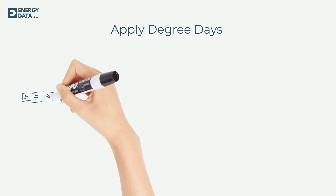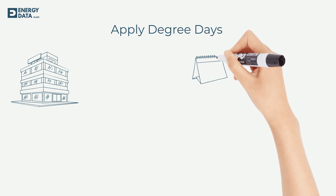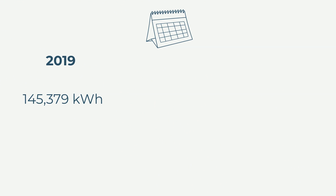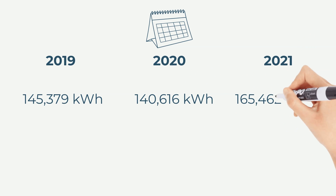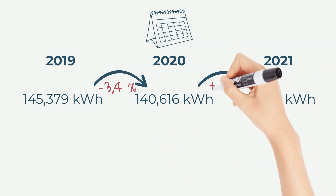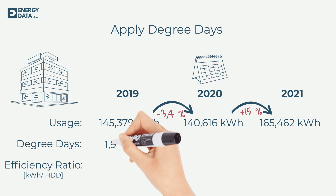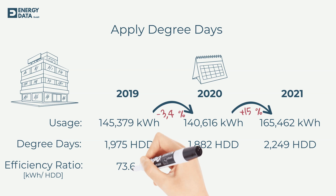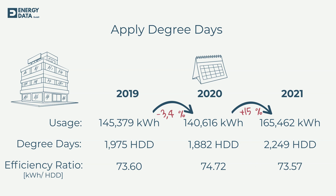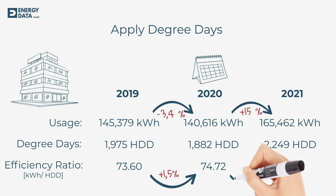Let's go back to the example from the beginning of this video and see how we can integrate degree days into the energy assessment of our office building. Looking at absolute kilowatt hours, you can see a small decrease from 2019 to 2020, and then a 15% increase from 2020 to 2021. When we integrate degree days, you simply divide your energy usage by the number of degree days — this value shows how many kilowatt hours you needed per degree day. The lower that number, the better your energy performance. In this example, we see a pretty stable efficiency ratio, even though in absolute numbers usage increased 15% in the last year. While the efficiency ratio is easy to calculate, it is not as intuitive as actual kilowatt hours.